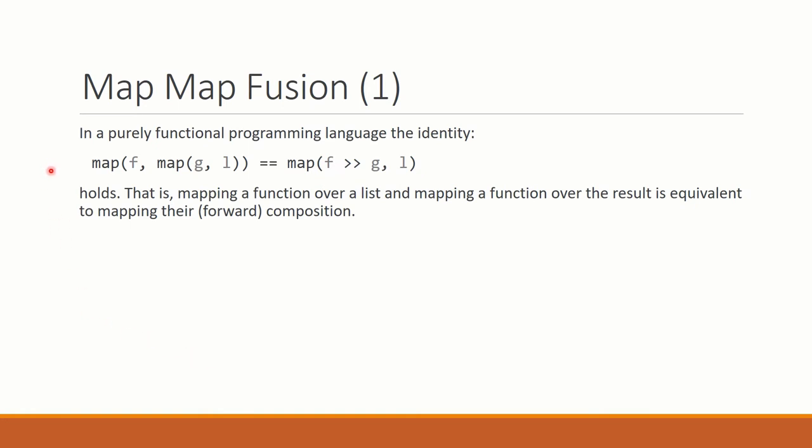Let's take a step back and consider a purely functional programming language such as Haskell. In Haskell, the following identity holds. If you have a map function and you map F over the result of mapping G over a list L, that's actually the same as mapping the forward function composition of F and G over L. In doing this way, you only have to traverse the list once, whereas here on the left-hand side, we traverse the list twice, constructing an intermediate list in the process.